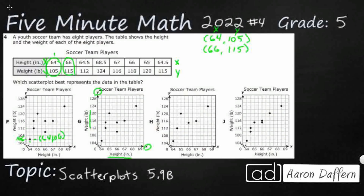Looking at the remaining choices, 64 and 105 is looking pretty good on both H and J. Now let's go to 66 and 115. Here's my 66 — right in between 116 and 112 is going to be 114, so I need to be right there for 115. That's looking good on H, and I see it on J as well.